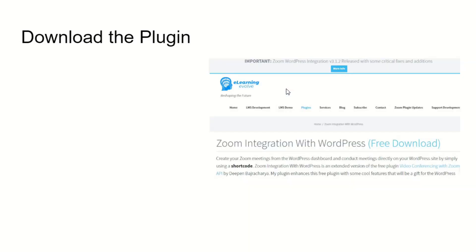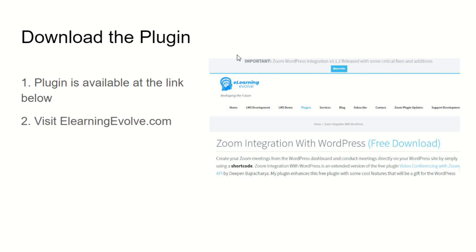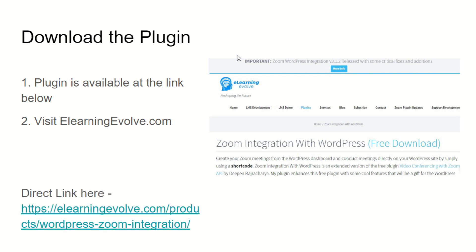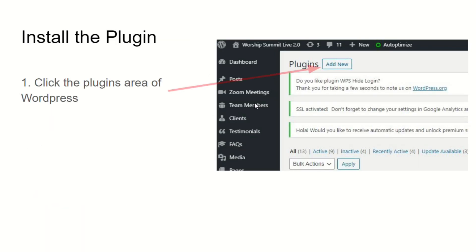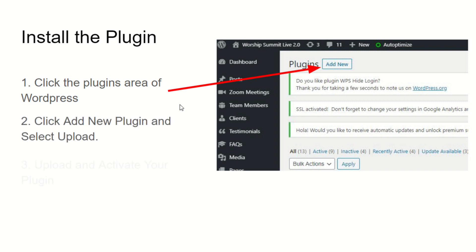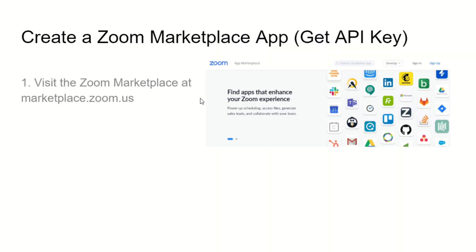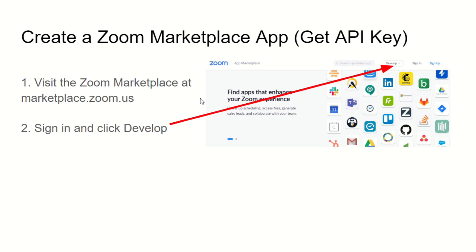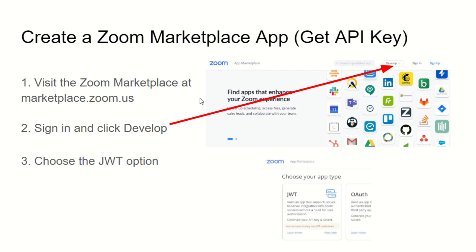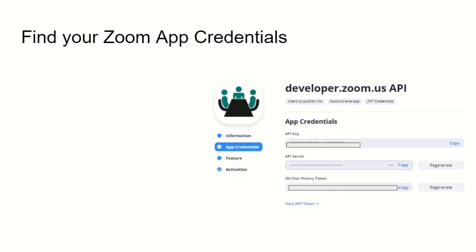Start by downloading the plugin. Go to elearningevolve.com — there are two current plugins available for Zoom integration with WordPress, and this is the best one I've found. Download it directly through the plugins dropdown there. The latest version is 3.1.2 and they made some great improvements. Once downloaded, install it into your WordPress website by clicking Add New, selecting Upload, and activating the plugin. Then go to marketplace.zoom.us and develop an app — it's very simple. Just sign in with your Zoom credentials, click the Develop button, and choose the JWT option.